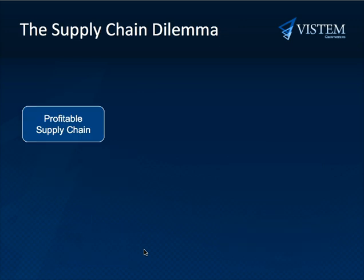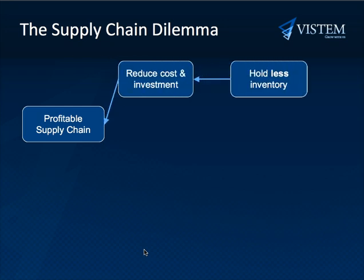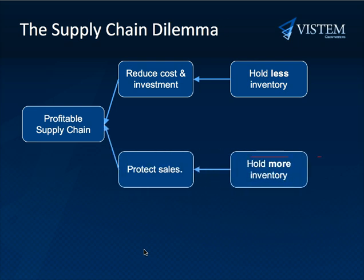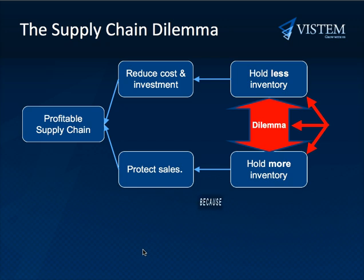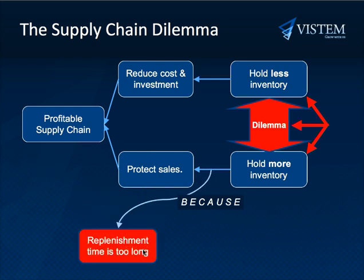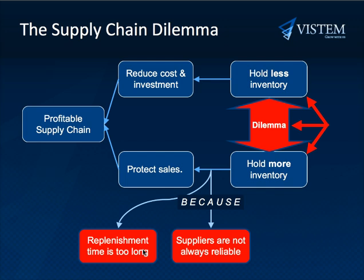Warehouse managers want to perform well too. To do that, they must reduce costs and investment — they have pressure to hold less inventory. On the other hand, they must also never lose a sale, which results in pressure to hold more inventory. The pressure to hold more inventory stems from replenishment times that are often too long, suppliers that cannot be relied upon, and inaccurate forecasts.